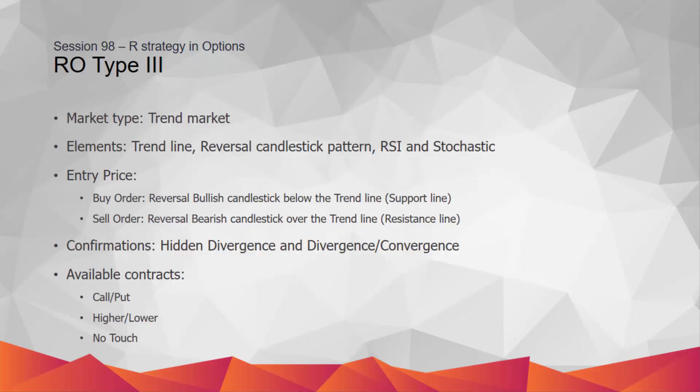Type 3 strategy: In this type, after fluctuations of price trend near the trend line, when price crosses the trend line completely, if a powerful reversal candlestick pattern forms, then the reversal spot can be detected. The overbought and oversold conditions by RSI and stochastic will confirm the generated signals as well. The bullish format: after price decreases toward the trend line and crosses the trend line completely, if a powerful bullish candlestick pattern appears, then a signal will be generated.